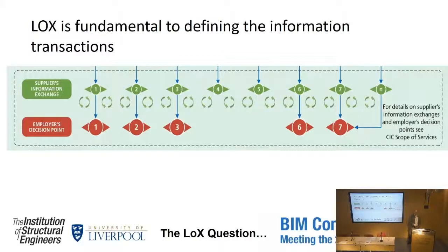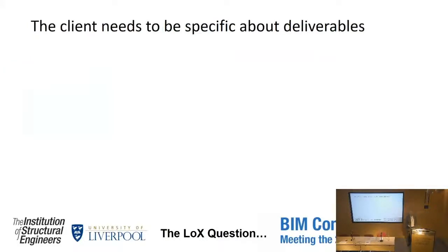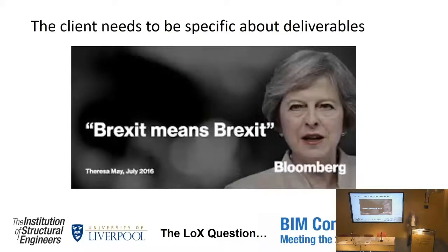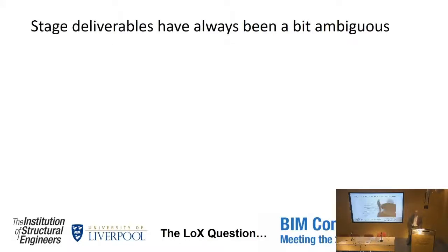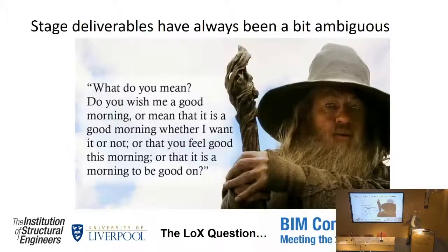The client therefore needs to be specific about the deliverables. We are brilliant in the English language at being ambiguous about what we actually mean. So it's obvious, isn't it? Brexit means Brexit. Level 2 means Level 2. It's obvious, isn't it? But ambiguity is what we do.